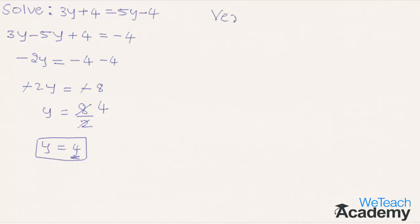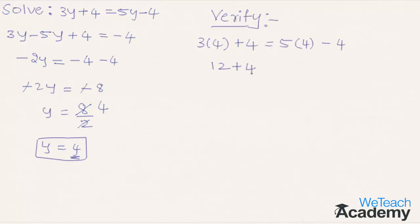Now let us verify the result by substituting y equal to 4 in the equation. By substituting we get 3 into 4 plus 4 equal to 5 into 4 minus 4. Here 3 times 4 is 12 plus 4, equal to 5 times 4 is 20 minus 4. On the left hand side 12 plus 4 is 16.